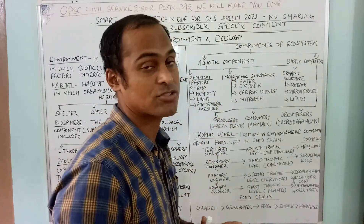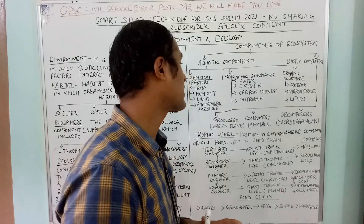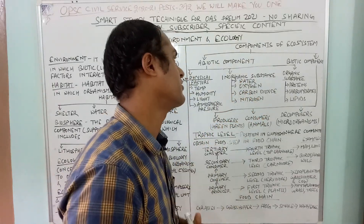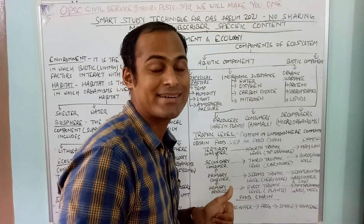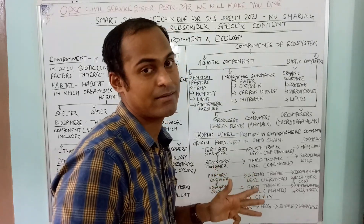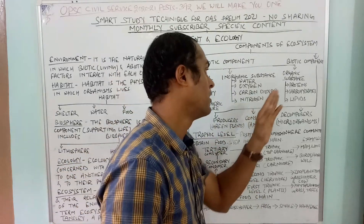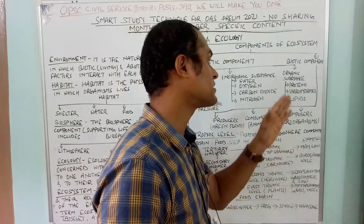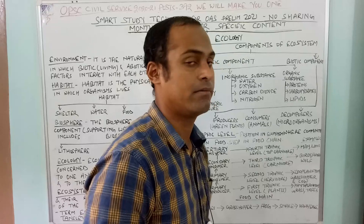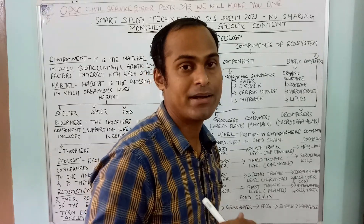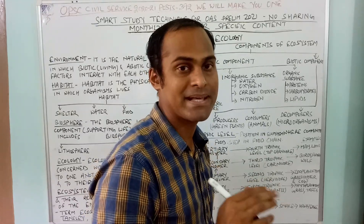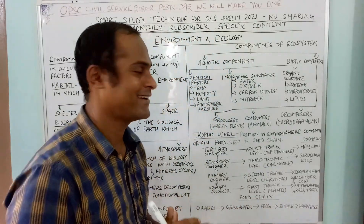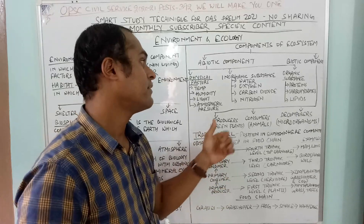The inorganic substances include water, oxygen, carbon dioxide, and nitrogen. The organic substances are protein, carbohydrate, and lipid — you can remember these as PCL: Protein, Carbohydrate, and Lipid.